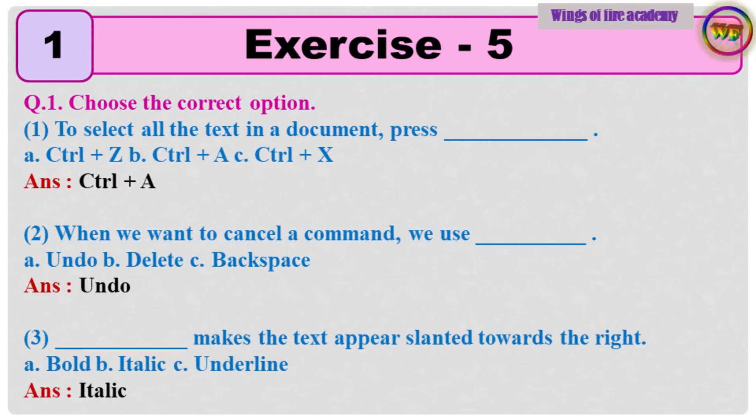Question 1: Choose the correct option. Question 1: To select all the text in a document, press dash dash. Answer: Control plus A. 2: When we want to cancel a command, we use dash dash. Answer: Undo. 3: Dash dash makes the text appear slanted towards the right. Answer: Italic.